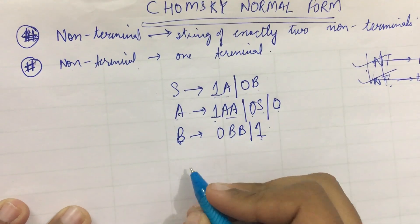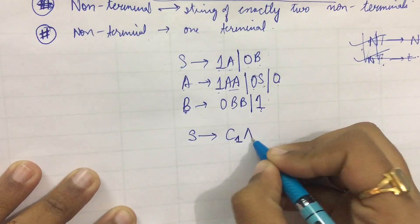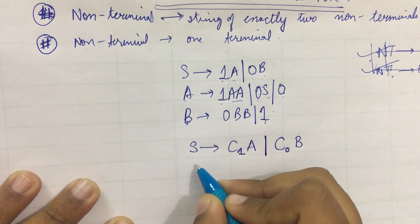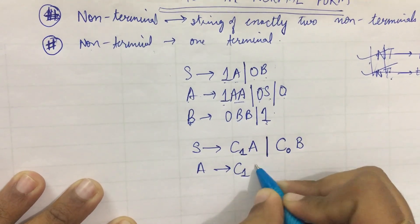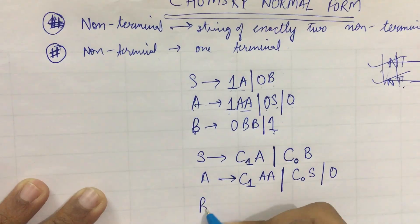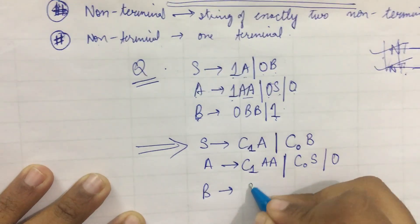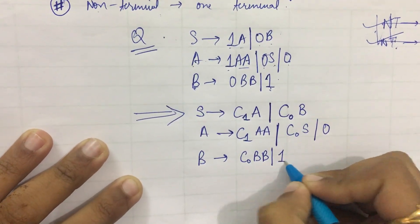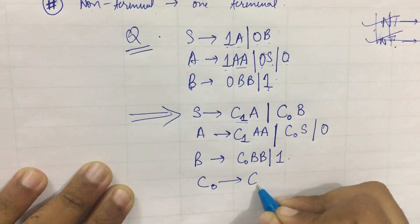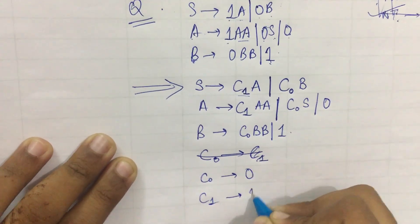For the substitution, I take '1' as C1 and '0' as C0, and define two more rules. First: C1 → a. Then: S → C1 a | C0 S | 0, and B → C0 BB | 1. C0 represents '0' and C1 represents '1'.